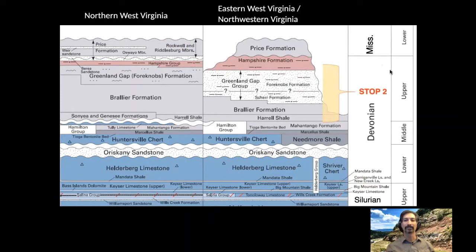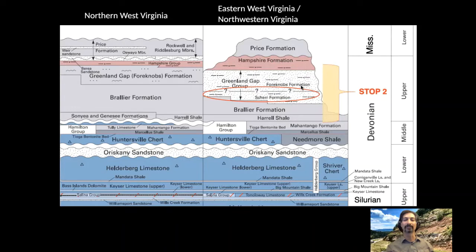Here at Stop 2, we're going to focus on these rocks right here that include the Mahantango Formation, the Harrell Shale, the Brallier, and then an interval right in here which is quite interesting. On this diagram, taken from a USGS publication, there's a good reason why there's a question mark at the contact between the Shear Formation and the Four Knobs Formation — these two formations make up the Greenland Gap Group.